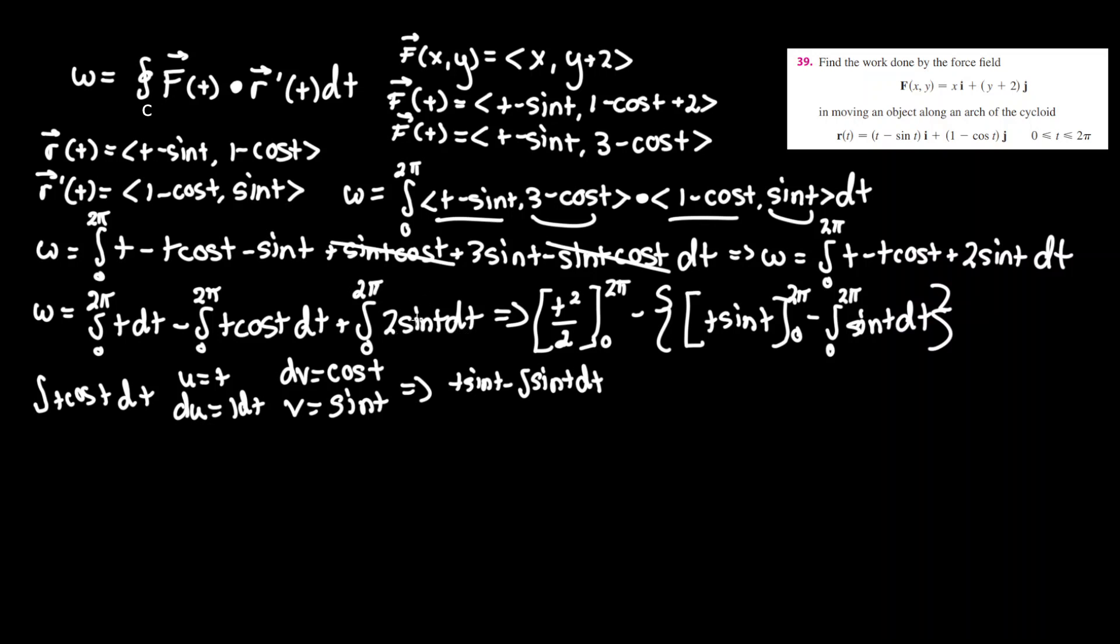We know that the integral of sine is just negative cosine, so we have to take the negative on the outside, minus 2 stays constant, 2 cosine of t, evaluated between 0 and 2pi.